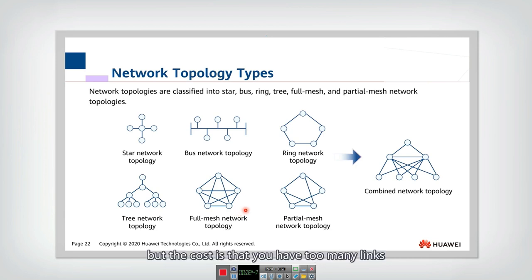But the cost is that you have too many links. So people think of that maybe we don't need to use this full mesh network, we only have this partial mesh. For some important nodes we have the links between each other, but for some other nodes maybe they don't have a direct link between each other.